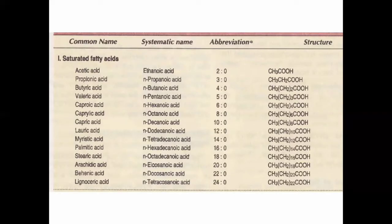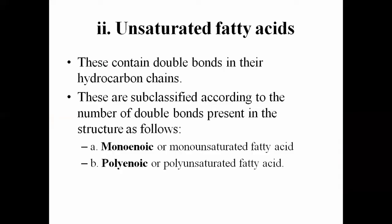Now let's move to unsaturated fatty acids. Unsaturated fatty acids are those fatty acids that have double bonds present. Due to the double bonds, unsaturated fatty acids are also classified on the basis of the number of double bonds. If there is one double bond present, they are monounsaturated fatty acids. If there is more than one double bond present, they are polyunsaturated fatty acids. And because of the presence of double bonds, unsaturated fatty acids are liquid at room temperature.